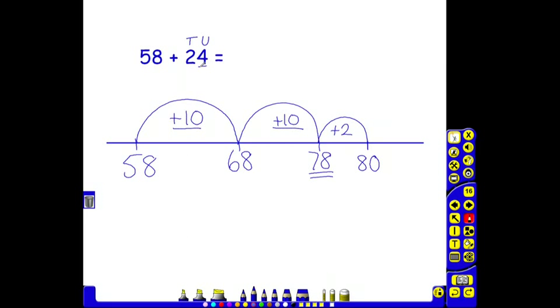We need to add 4 units. So far we have added 2. We have got 2 left to add. 80 add our final 2 takes us to 82.